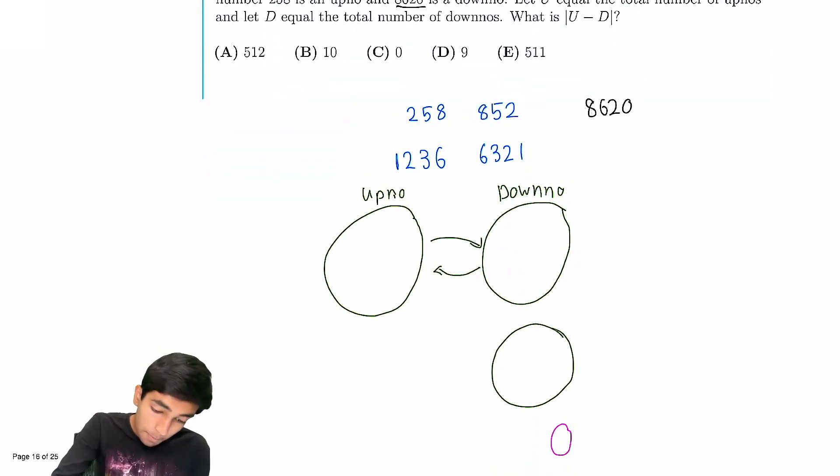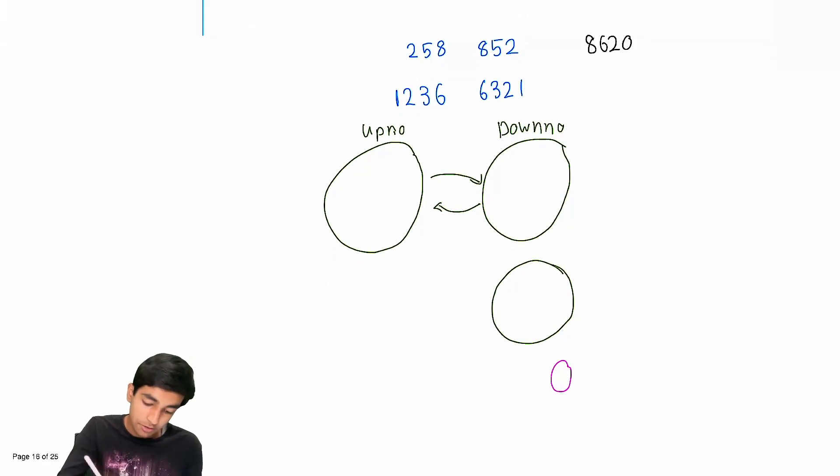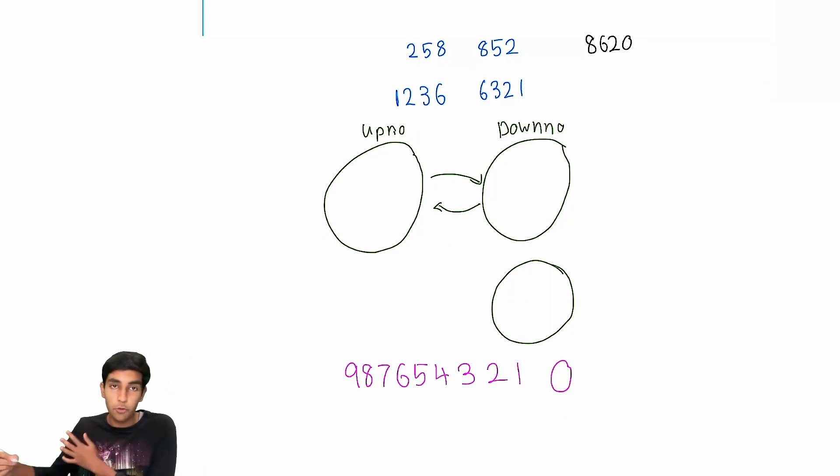Well, first of all, upno has to have at least two or more digits. So the key thing in this problem is imagine we just have a giant string of 9, 8, 7, 6, 5, 4, 3, 2, 1, 0.